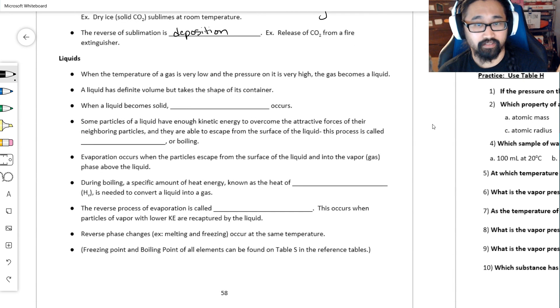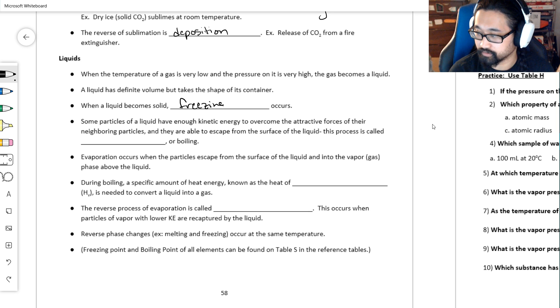When the temperature of a gas is very low and the pressure is high, it becomes a liquid with definite volume taking the shape of its container. When a liquid becomes a solid, we already know this—we call it freezing.